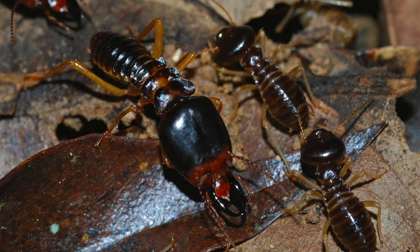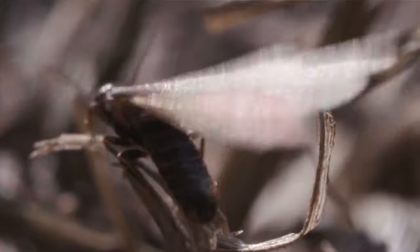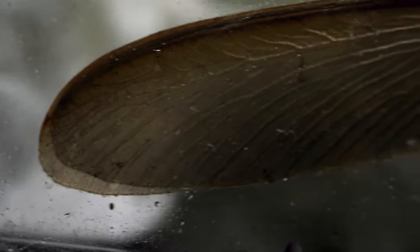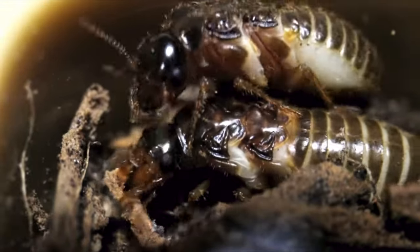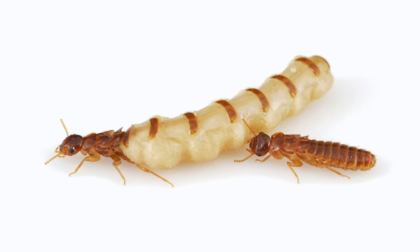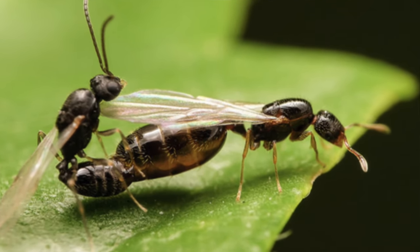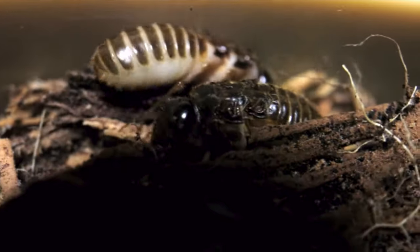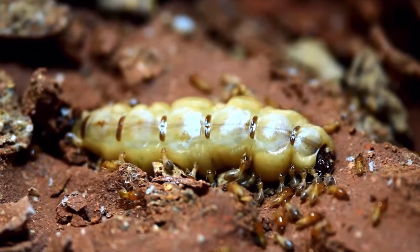Termites have a eusocial colony structure with many castes, known as polymorphism. A colony is founded by two alates — the soon-to-be reproductive males and females — who shed their wings after mating to become king and queen. Unlike ants, the king actually survives until the colony dies, continuing to pass down his genes.